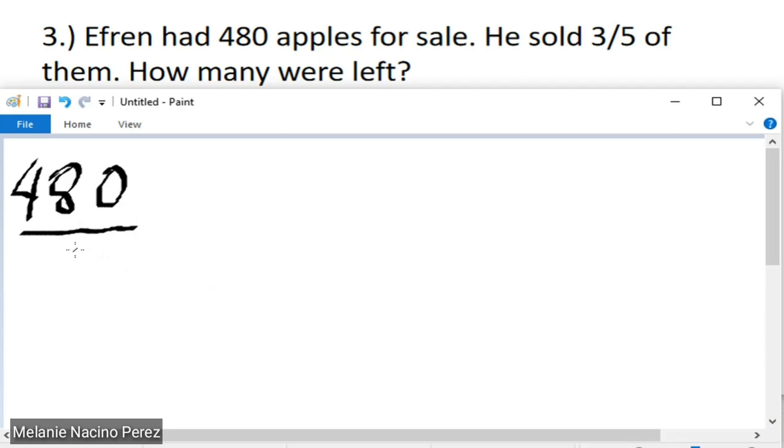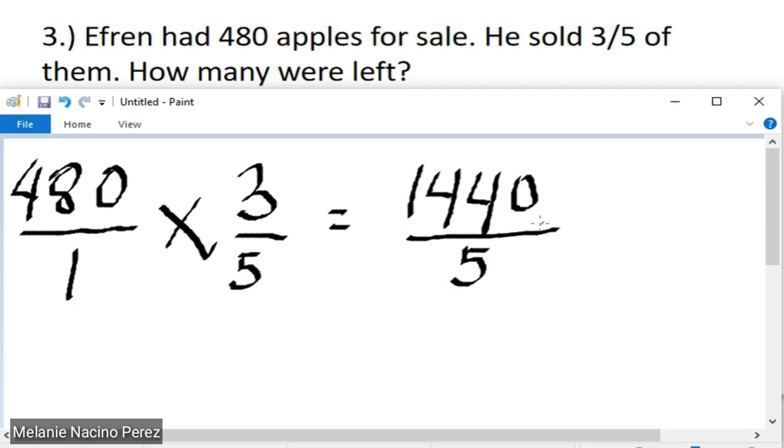So, Efren sold 3 fifths of 480. So, 480 multiply by 3 fifths. So, 480 times 3 is equivalent to 1,440. And 1 times 5 equals 5. And then, 1,440 divided by 5 is equivalent to 288. So, 288 apples were sold by Efren.